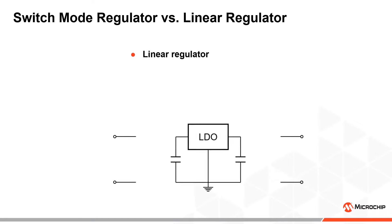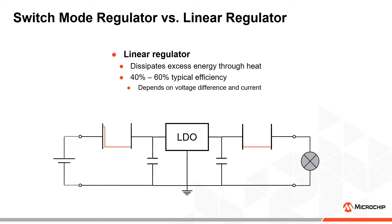In contrast, more traditional linear power supplies rely on dissipating excess energy through heat using resistance. Efficiency in linear regulators is determined by the current and voltage drop through the regulator.